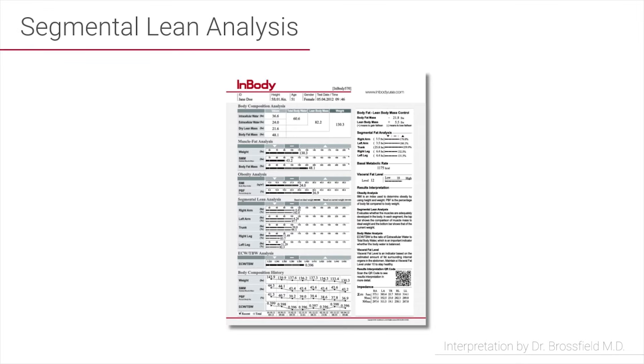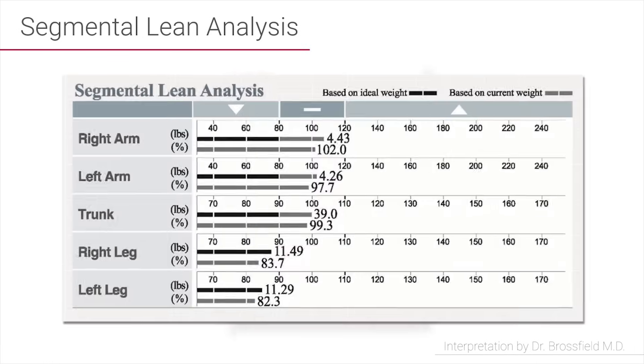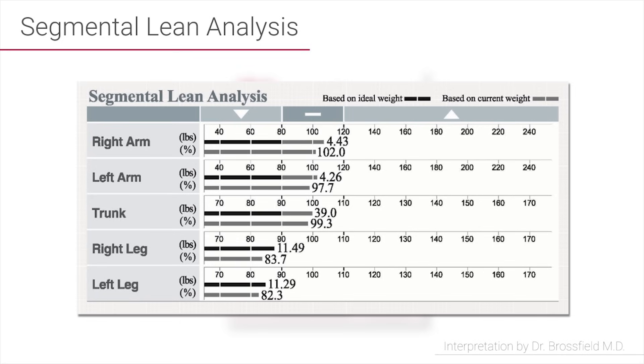The next segment of the results sheet is the segmental lean analysis. In this segment, it breaks out every part of your body—so each arm, your trunk, each leg—and tells you how many pounds of muscle is in each segment. The great thing about this is you can use this to tell what you want to do in your workout regimen.